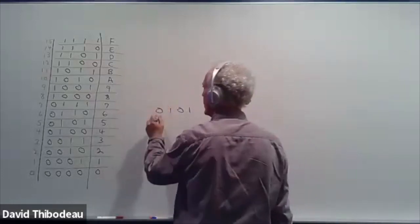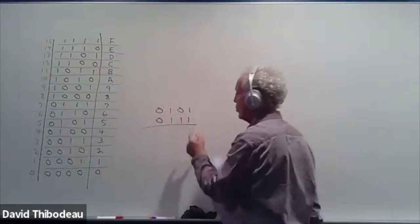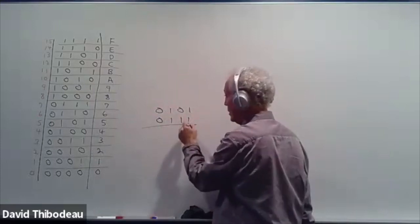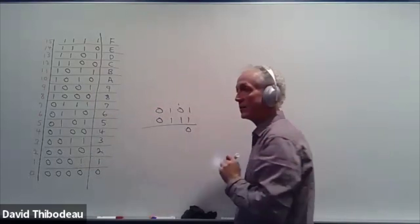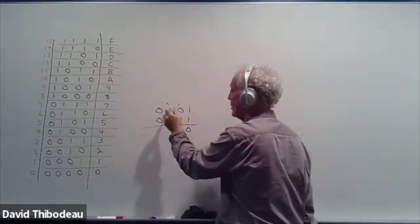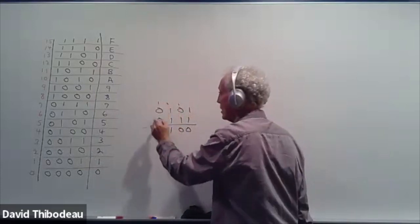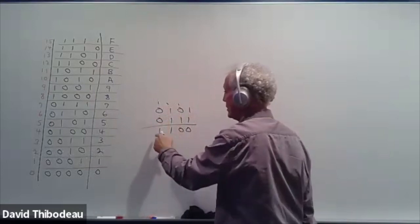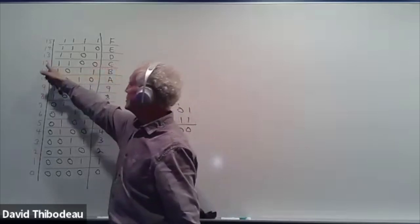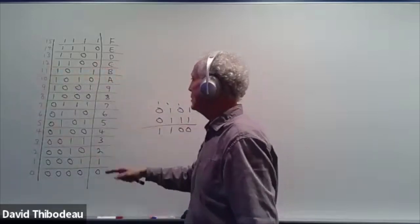Seven is zero, one, one, one. One plus one overflows, which is two — so zero and we carry the digit. One plus one is zero, carry the digit. One plus one plus one is one, carry the digit. One, zero, zero, zero is one. So we end up with one, one, zero, zero. Looking that up: one, one, zero, zero is C, which is 12. So five plus seven is 12.